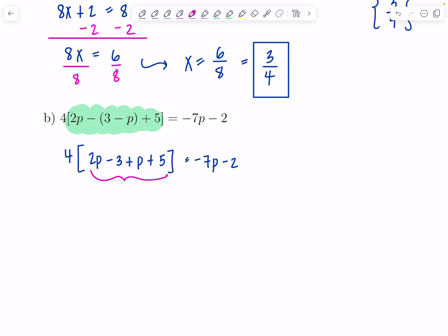Inside here, let's combine like terms. We're going to have 3p plus 2. And then I have the 4 outside. I can switch to just regular parentheses now. 12p plus 8 equals negative 7p minus 2. And then distribute. So this is 12p plus 8 equals negative 7p minus 2.